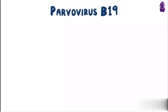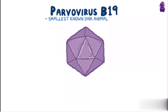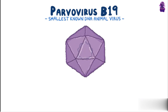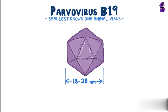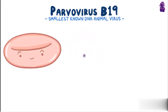Parvovirus B19 is the smallest known DNA animal virus, coming in at a tiny 18 to 28 nanometers in diameter. In comparison, the average size of a single human red blood cell is a whopping 7,200 nanometers.